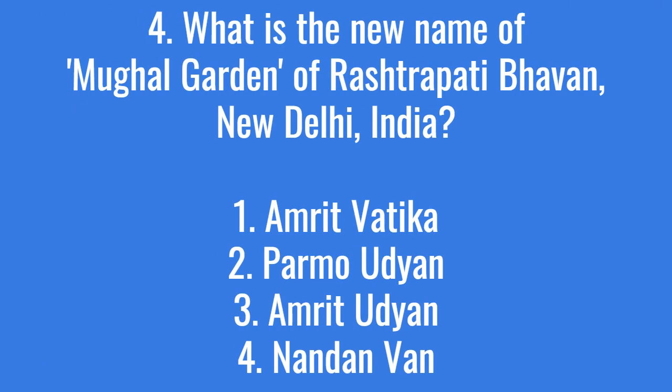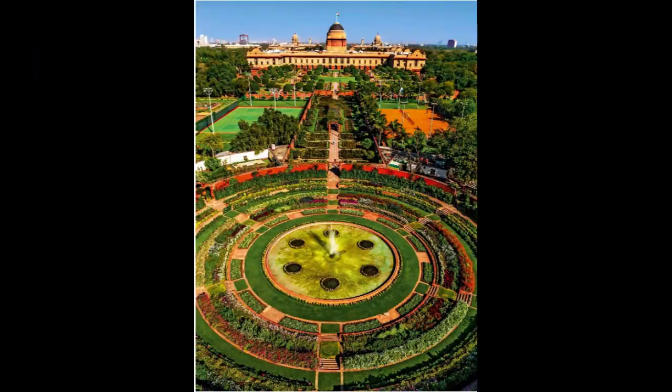What is the new name of the Mughal Garden of Rashtrapati Bhavan, New Delhi, India? The right answer is option 3: Amrit Udyan. The Rashtrapati Bhavan Gardens, popularly known as the Mughal Gardens, was renamed as Amrit Udyan on 28th January 2023.